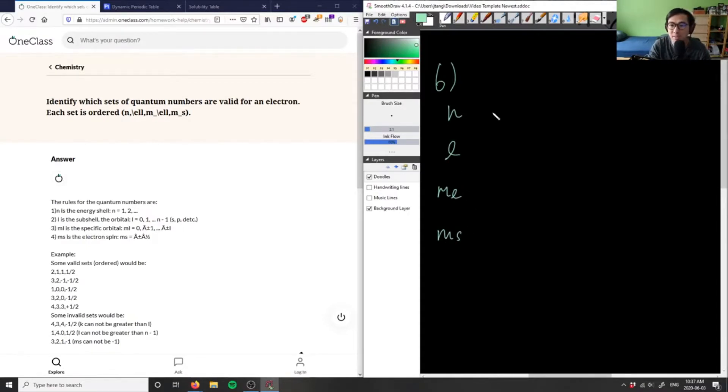n here is going to be our principal quantum number, and this determines the number of shells that our electron has. So n could be one, two, and so on and so forth, like they did here, which is great.